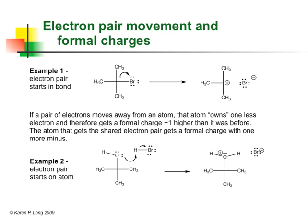You have undoubtedly noticed that the formal charges changed on some of the atoms in our mechanisms. Here's an easy way to keep track. Remember that when you determine formal charge for an atom, you count one electron for each shared electron pair as belonging to that atom. If a pair of electrons moves away from an atom, that atom owns one less electron, like the C on the top example and the O on the bottom example.